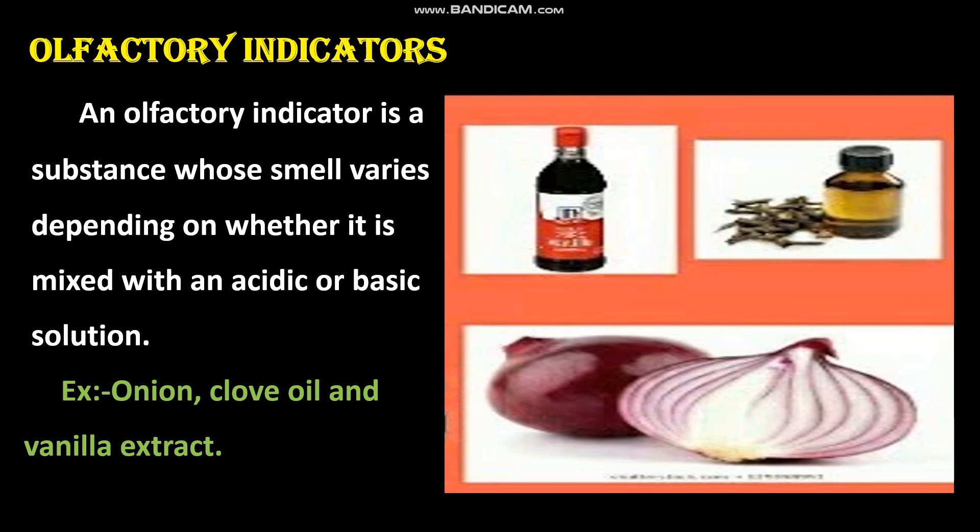So we have seen different types of indicators: natural indicators — examples include red cabbage leaves, turmeric, and colored petals of flowers such as hydrangea, petunia, and geranium; synthetic indicators — examples are methyl orange and phenolphthalein; and olfactory indicators such as onion, vanilla, and clove oil, whose odor varies in acidic and basic solutions.